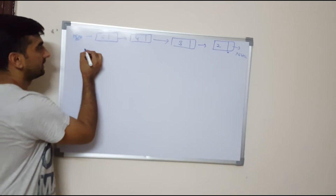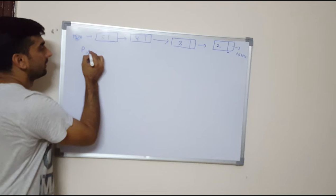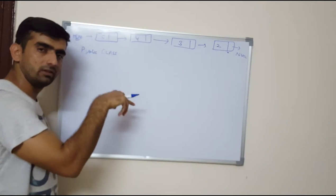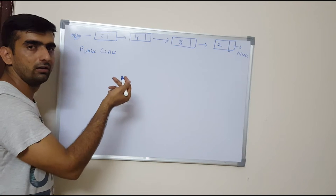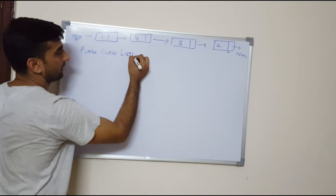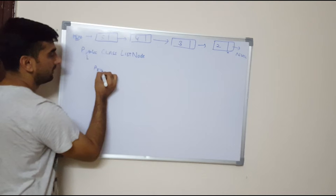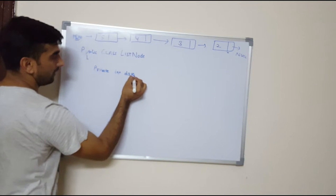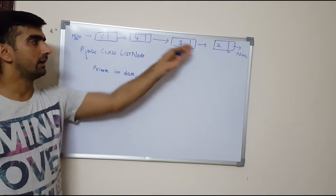So if we have to implement this linked list, how would a typical implementation look like? I have one request for this video — kindly ignore the syntactic or semantic part while I am writing some algo parts, this is just for understanding purpose. So this is my public class, say ListNode. I have one variable: int data. I have taken data as int because in this example we are taking a linked list which is holding integer values.